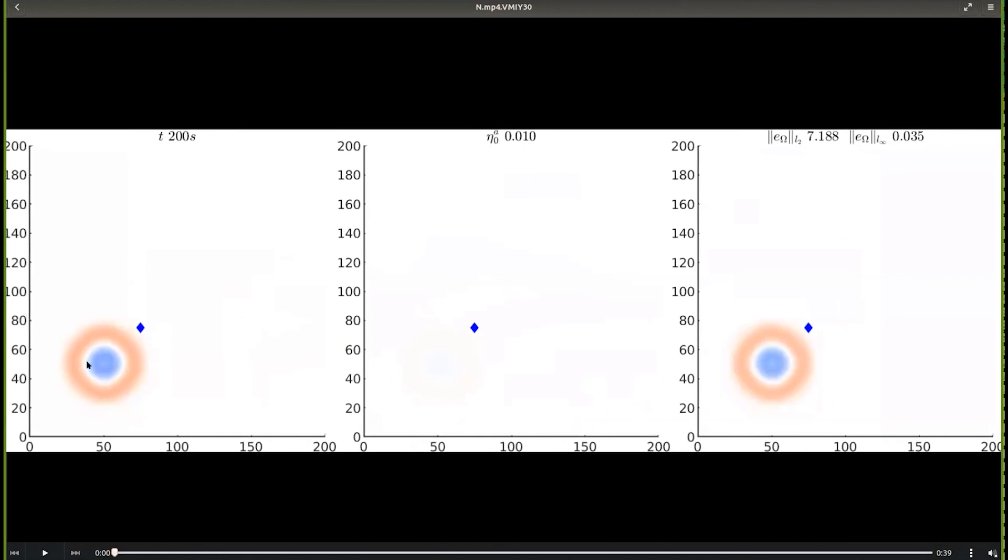So on the left is the tsunami waveform. The initial hump has evolved till 200 seconds. And at 200 seconds the sensor has started picking up the waveforms. So on the left is the actual simulation by which I generate the synthetic waveforms for the study. In the middle is the assimilated waveform. So at 200 seconds nothing has started, no process has started. On the right is the error between the actual and the assimilated waveforms.